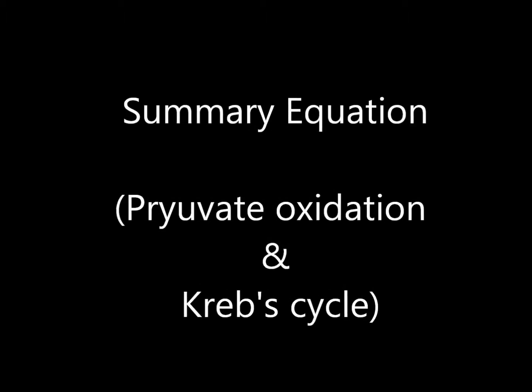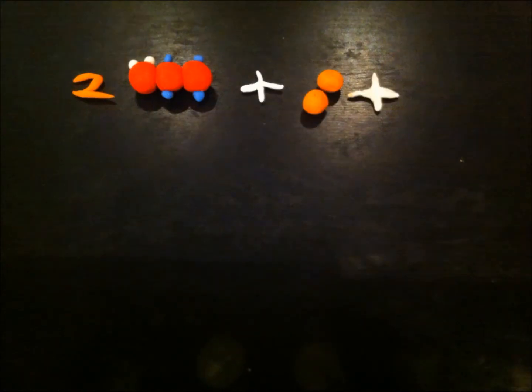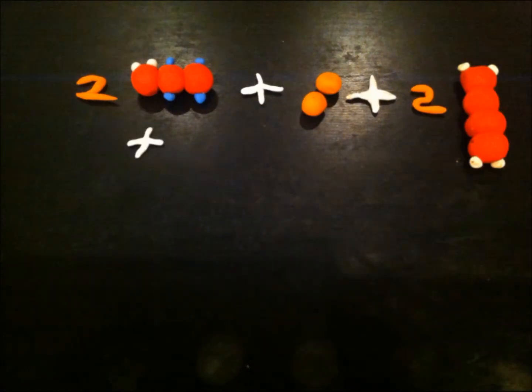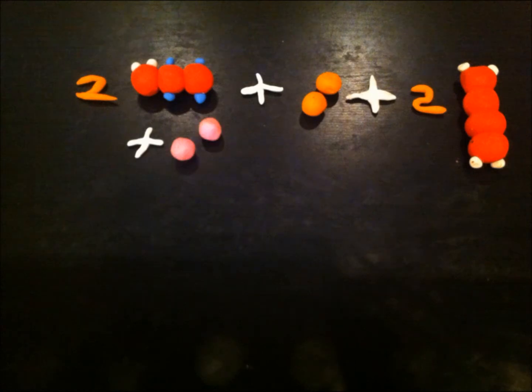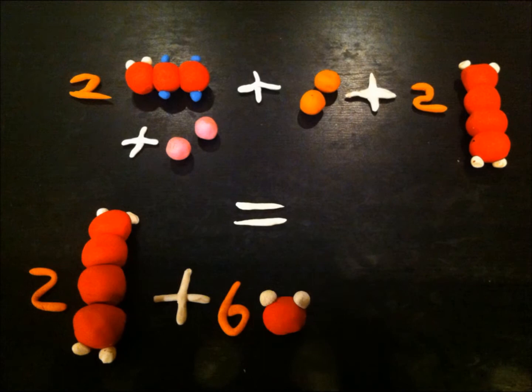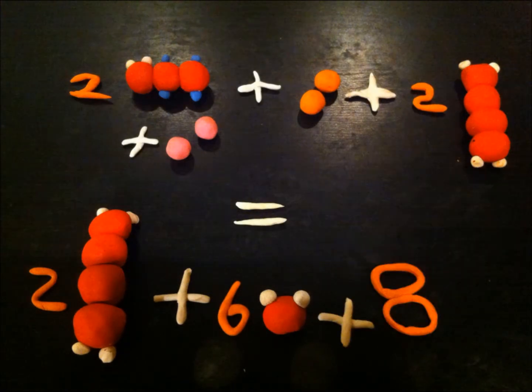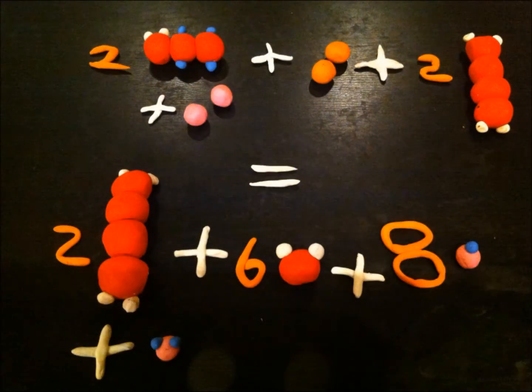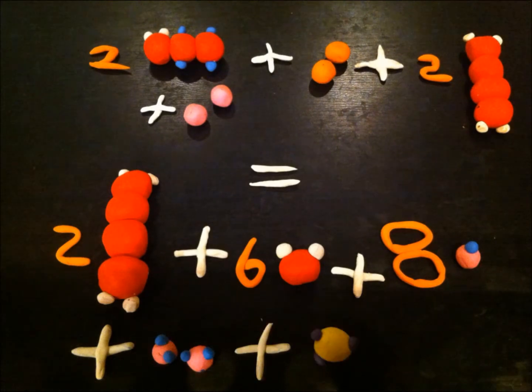Summary equation: 2 pyruvate plus 2 CoA plus 2 oxaloacetate plus 2 NAD-positive produces 2 oxaloacetate plus 6 CO2 plus 8 NADH plus 2 FADH2 plus 2 ATP.